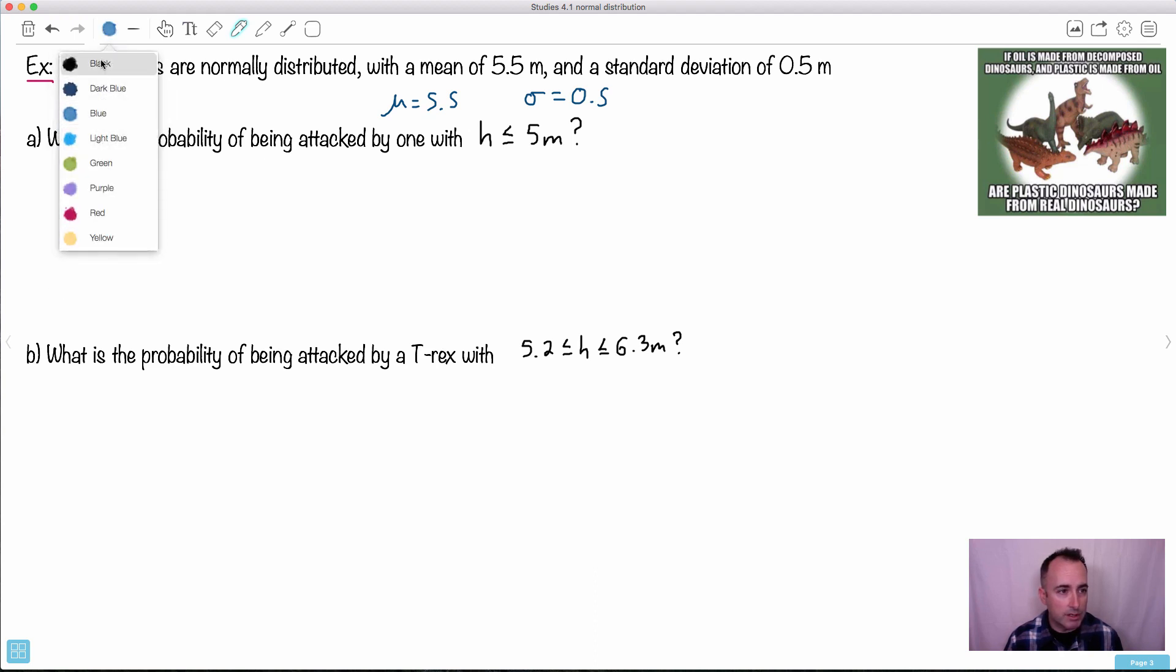If we really want to draw this, we actually could. So there's my normal distribution. I know that this right here is 5.5. I know that these values right here, this is one standard deviation above and below. So this would be 6 because it's 0.5 above that. This here is 5. And the question is we want to know what's the probability of being attacked by one basically here or less.